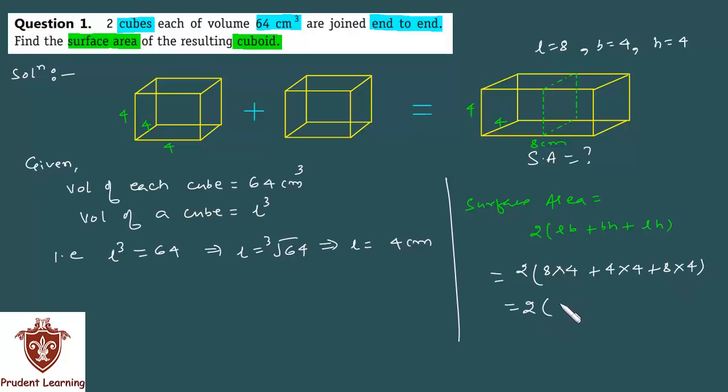Which gives us, twice of 8, 4s are 32, plus 4, 4s are 16, plus again 8, 4s are 32, jais se aapko milega, twice of 32 or 32 to 64 ho jaaga, 64 plus 16 karhenge aap, to aapko milega 80, aur aapko malum hai, 2 into 80, 2 into 80, 160.